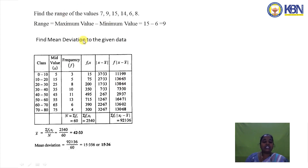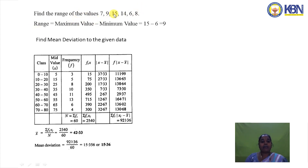To calculate the range of the values 7, 9, 15, 14, 6, 8: we identify the maximum value as 15 and the minimum value as 6. The range is 15 − 6 = 9.